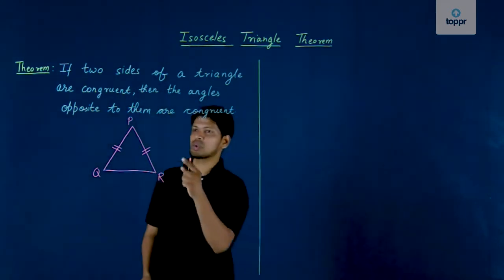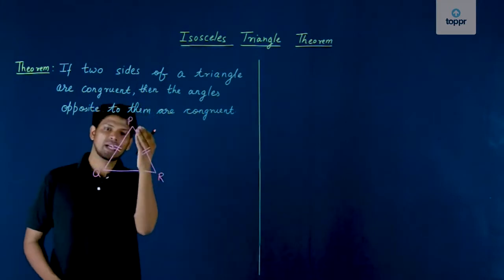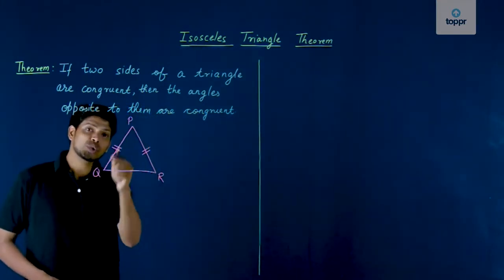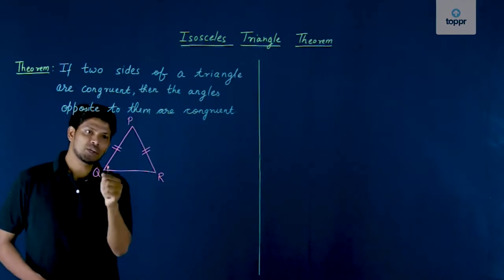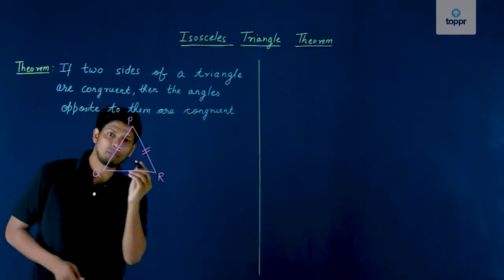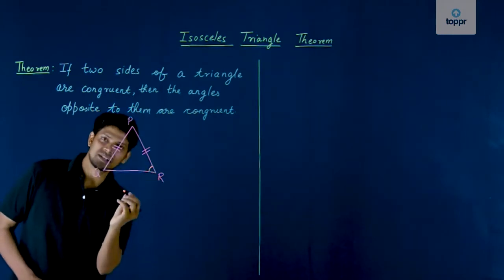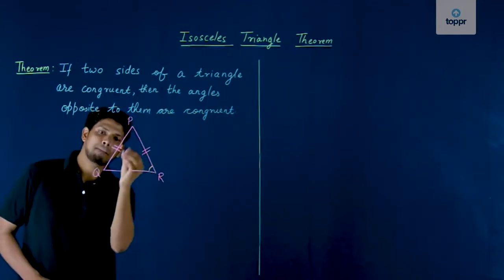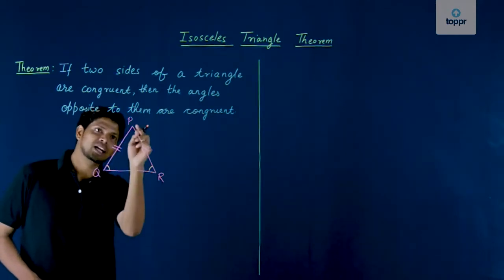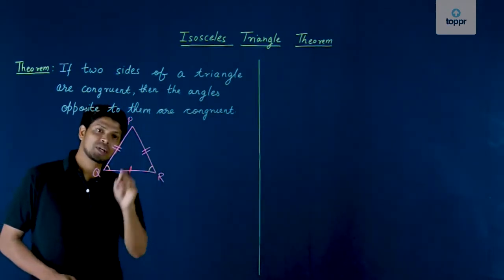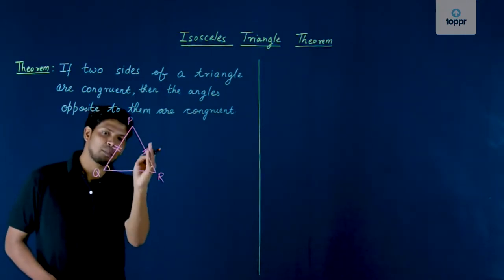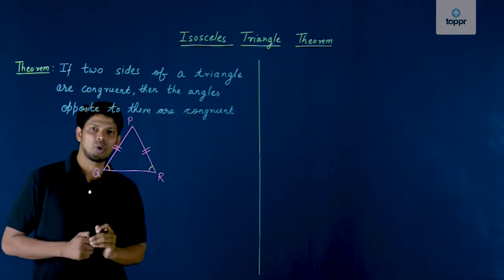Let us see this with an example — triangle PQR. If two sides, PQ and PR, are congruent, then the angles opposite to them are also congruent: angle R is the opposite angle to PQ, and angle Q is the opposite angle to PR. So if the sides are congruent, the opposite angles are also congruent.